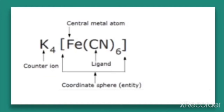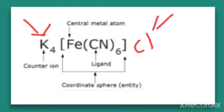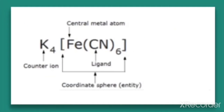If the counter ion is positively charged, like K+, it should be written on the left hand side of the bracket. If it is a negatively charged counter ion, like Cl−, it should be written on the right side of the coordination sphere. In this example, the counter ion is positively charged — 4K+ — written as K4 on the left hand side. The ligands are of a fixed number; here there are 6 CN, so that number is called the coordination number.